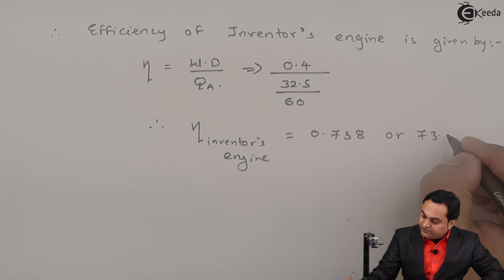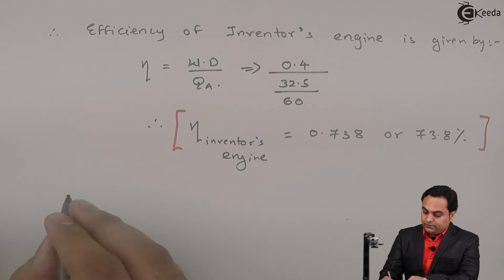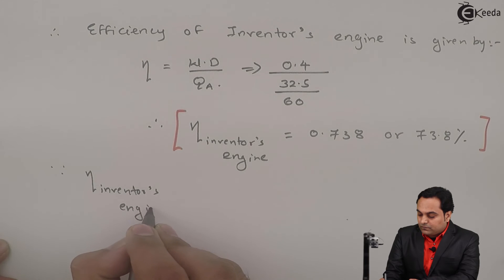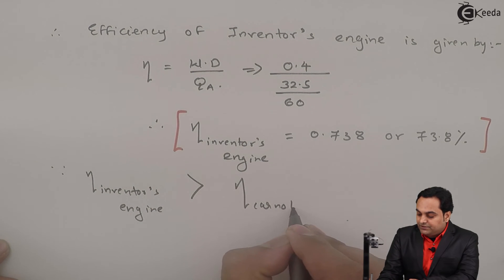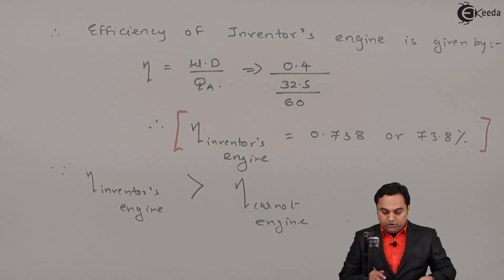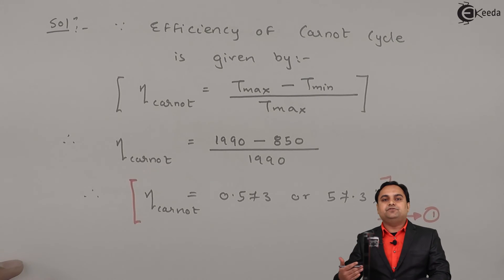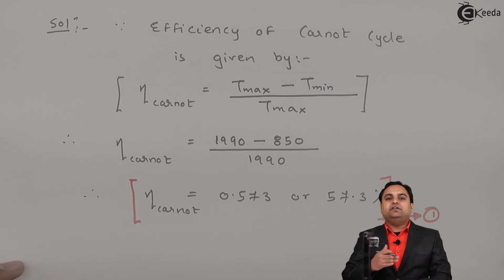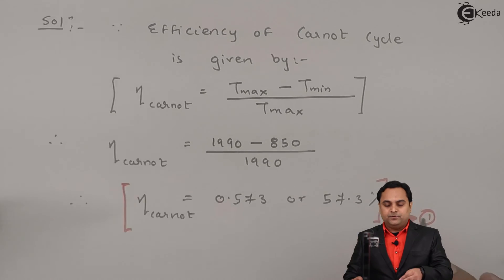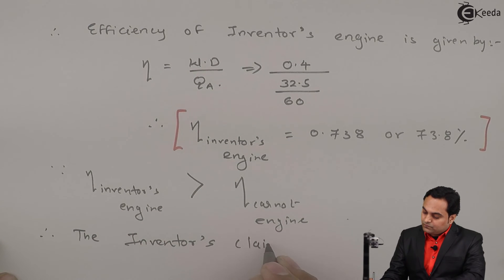The efficiency of the inventor's engine is 73.8 percent. Since this is greater than the Carnot efficiency of 57.3 percent, and no engine can produce efficiency more than that of the Carnot cycle, the inventor's claim is false.